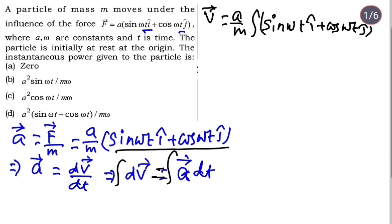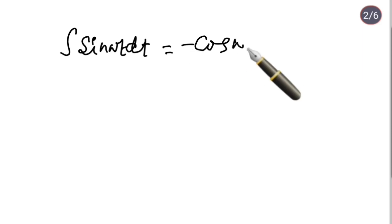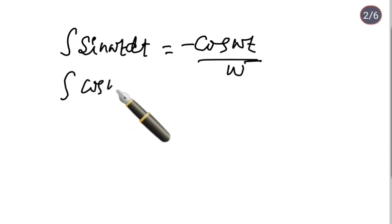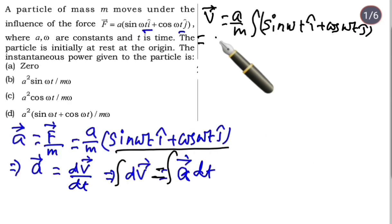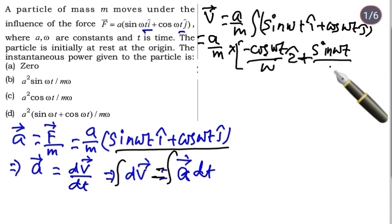We know how to integrate sin ωt and cos ωt. Sin ωt gives minus cos, so it becomes -cos ωt, and we divide by the constant ω. Similarly, cos ωt dt becomes plus sin ωt divided by ω. So it's a by m into (-cos ωt/ω) i cap plus (sin ωt/ω) j cap, with some unknown constant C.